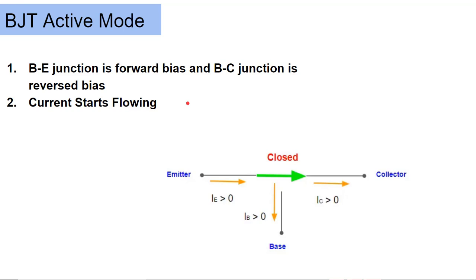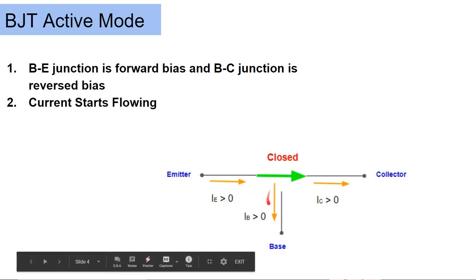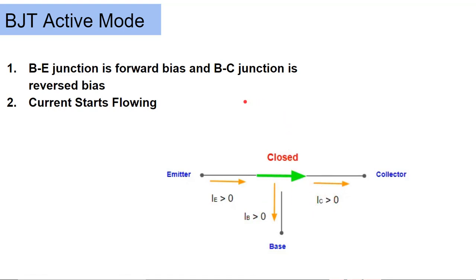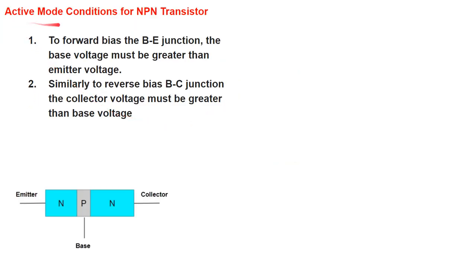I will explain this whole concept in the last slide — just keep in touch with me and you will completely understand the difference between active mode and saturation mode, because many times students mix up these two modes. Here you can see that the emitter current is not zero now — emitter current is greater than zero. So current is also flowing towards the base as well as towards the collector. So let's understand the conditions of this mode. Active mode conditions: the base-emitter junction should be forward biased.